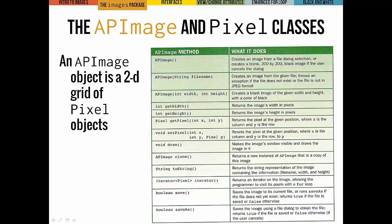There are things you can do to an APImage. You can make a new APImage, get the width and height, get a particular pixel object at a particular coordinate, set a particular coordinate position to have a new pixel, draw or render the image, clone the image, convert the image to a string representation, and save the image — either with the same name or a different name.